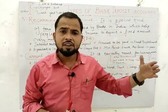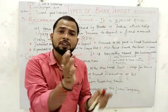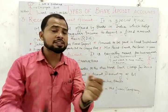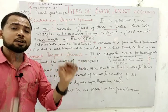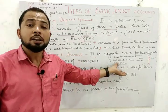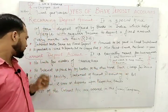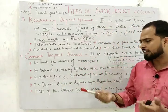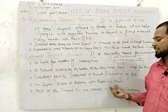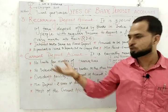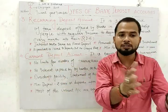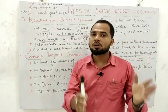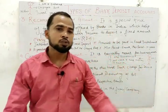Overdraft facility means you can withdraw more than your account balance. For example, if you have ₹1 lakh in your account but need ₹1 lakh 20 thousand, you can withdraw ₹1 lakh 20 thousand — the extra ₹20,000 is the overdraft. This facility is only given to current account holders. A statement of account and discounting of bills facility are also given to current account holders. The minimum deposit is ₹5,000 in most banks, though it depends on the respective bank. Most current accounts are opened by firms and companies.